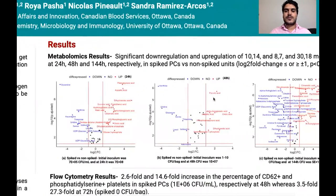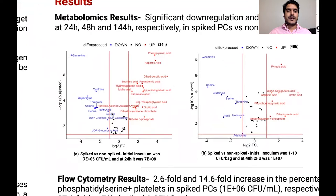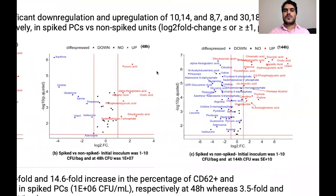Now going to the results: we observed a strong modulation in the metabolome of the PCs, as you can see here in Figure A. In this experiment, we spiked the PCs with 7×10⁵ CFU per bag, and at 24 hours the bacterial concentration was 7×10⁸, showing highly down-regulated and up-regulated metabolites. In the parallel experiment, we spiked PCs with 1 to 10 CFU per bag, and modulation in the metabolites occurs at 48 hours onwards, with higher modulation at 144 hours.